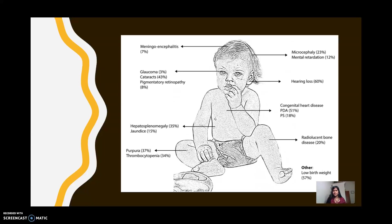These are more examples of all the different organ systems that can be targeted by CRS. You can have glaucoma affecting the ocular system, congenital heart disease, and even deafness.